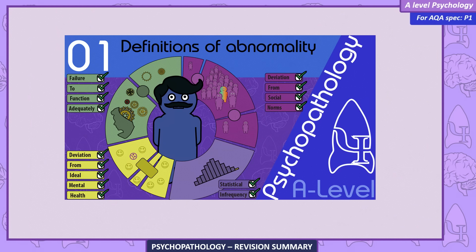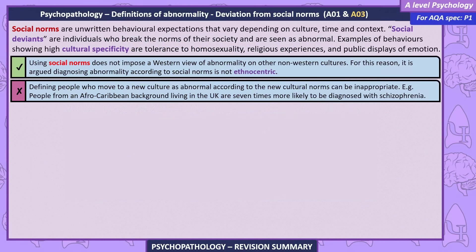Definitions of Abnormality. Deviation from Social Norms. Social norms are unwritten behavioral expectations that vary depending on culture, time, and context. Social deviants are individuals who break the norms of their society and are seen as abnormal. Examples of behaviors showing high cultural specificity are tolerance to homosexuality, religious experience, and public displays of emotion.